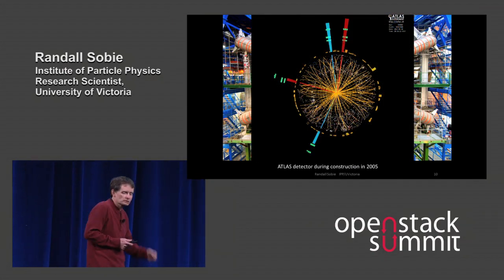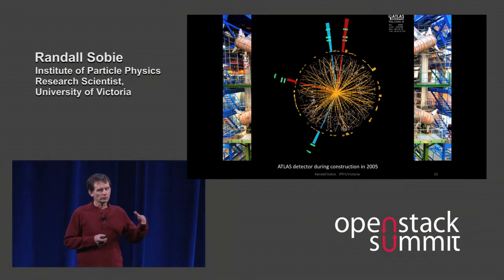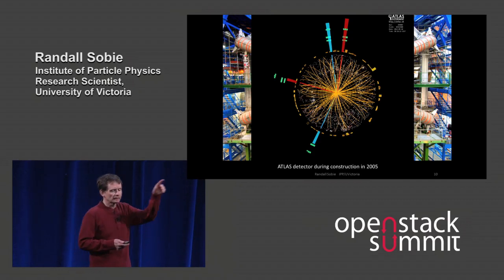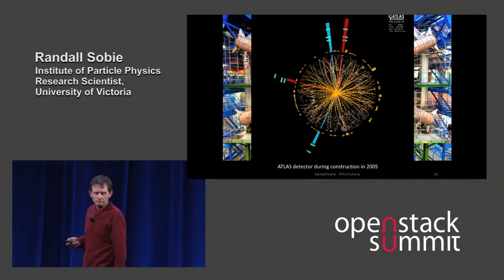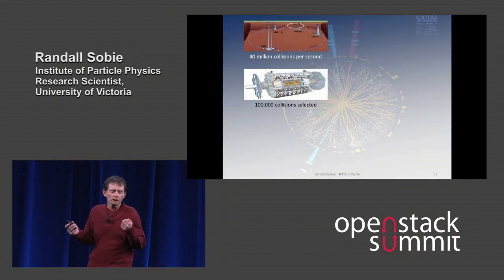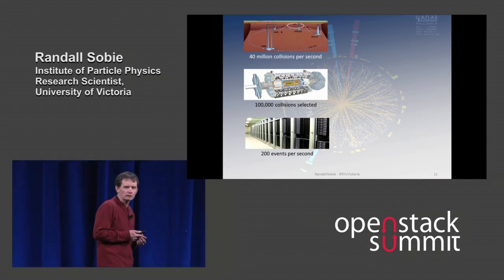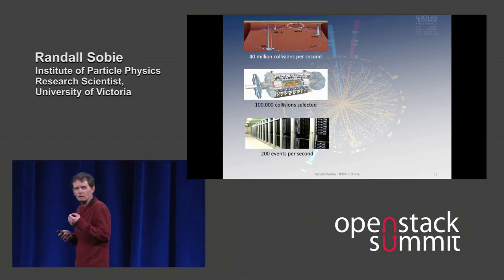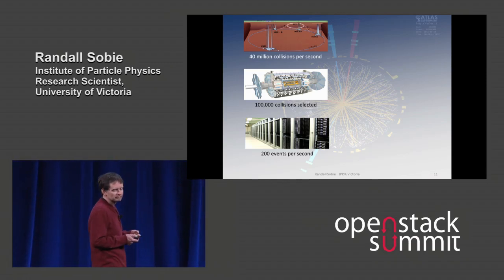Today we're recording data. We've just finished a period of data taking and we're now in an upgrade period of two years with no beam. The protons are colliding every 25 nanoseconds, so we get 40 million collisions per second. The Atlas detector then selects a hundred thousand per second, and then we pass them to event filter computers to select 200 per second at two megabytes per event. So we're collecting 400 megabytes per second for roughly half the year.